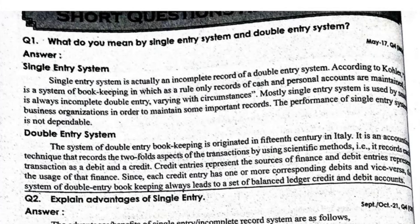The first important question in Unit 4 is: what do you mean by single entry system and double entry system? Single entry system is also known as incomplete records — whatever incomplete records of the double entry system exist, that is called the single entry system. Our accounting system is a double entry system, meaning whatever adjustments you have, we need to enter them into two accounts — that is called the double entry system.